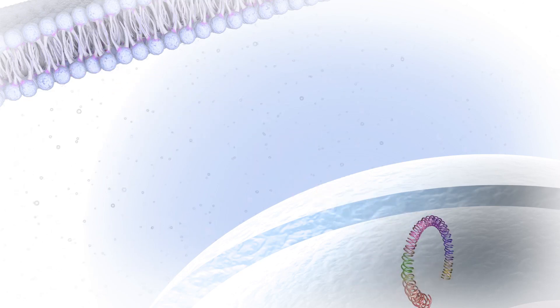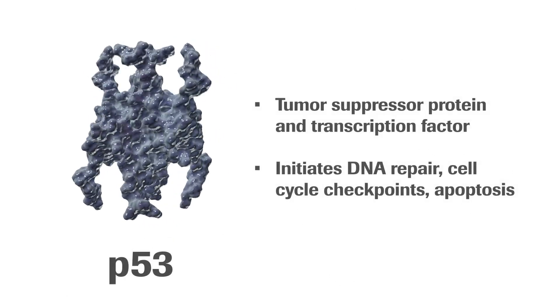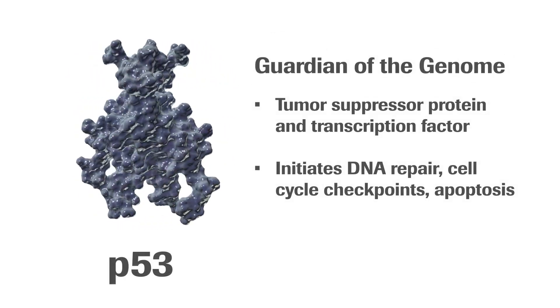In normally dividing cells, two gene products carefully regulate the process. These are the P53 and retinoblastoma, or PRB, proteins. The P53 is responsible for guarding the genome by initiating DNA repair, cell cycle checkpoints, and apoptosis.